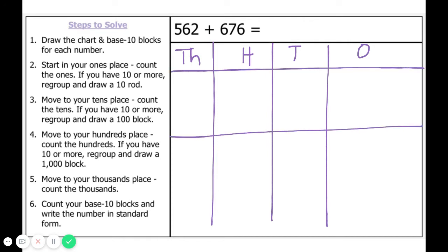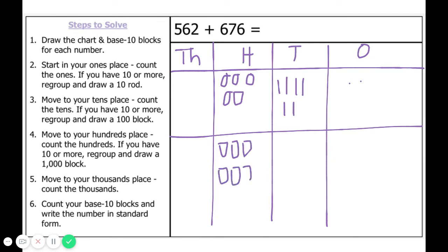Since we have two numbers, we also want to draw a line down the middle. We are going to start by drawing 562 with five hundreds, six tens, and two ones. And then we have 676, which has six hundreds, seven tens, and six ones.